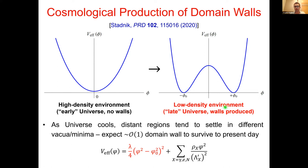The general argument is that distantly separated regions tend to settle in different vacuum minimum states, and we expect of order one domain wall to survive to the present day. We expect only about one because domain walls have essentially infinite extent in two spatial dimensions, so unless walls are nearly parallel and stacked in a pancake formation, two walls will tend to touch, reconnect, and annihilate efficiently to minimize the energy in the domain wall network.